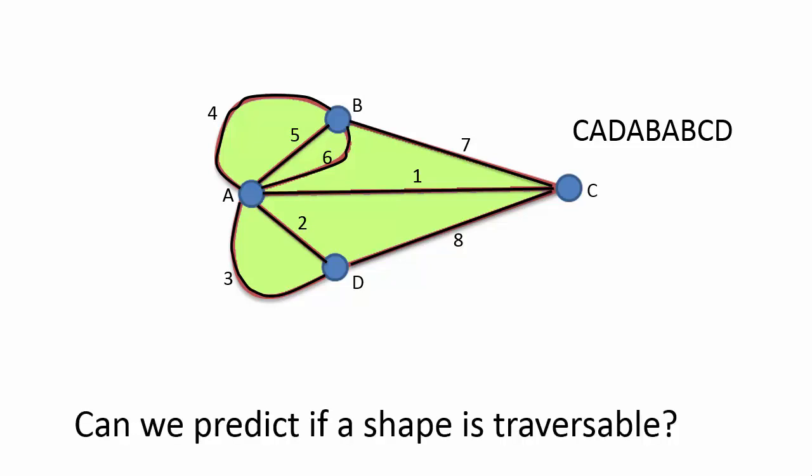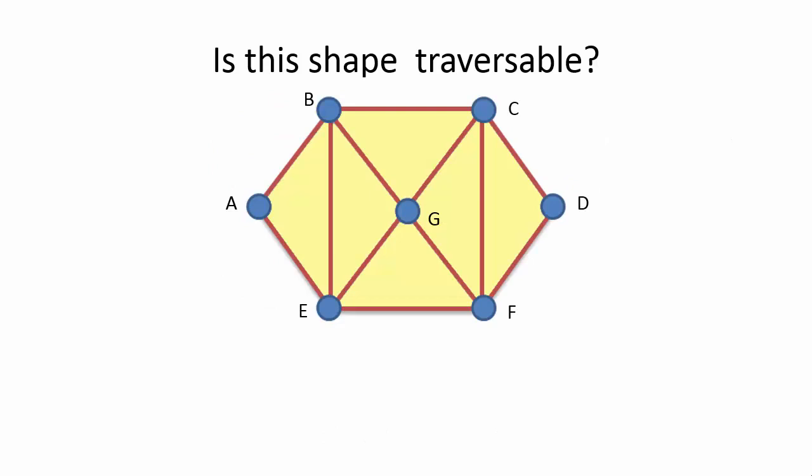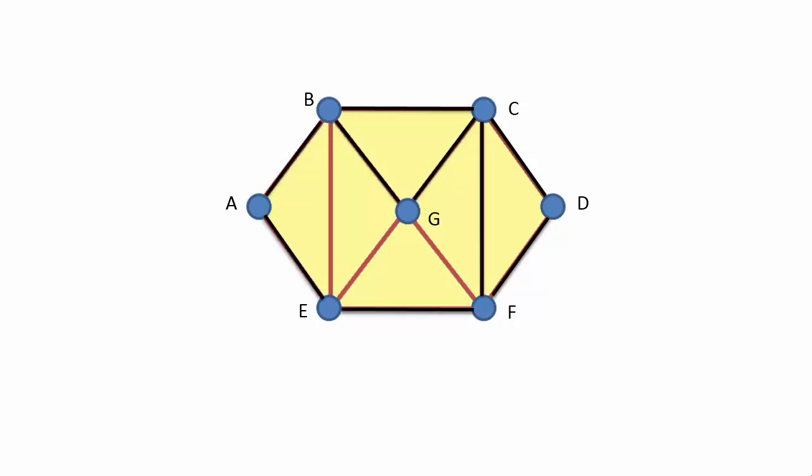Is it possible though to predict in advance whether or not the path is traversable? We shall see shortly. What about this shape? Is this one traversable? Again, the answer is yes. Here is one way of doing that: B to C, C to D, D to F, F to C, C to G, G to B, B to A, A to E, E to F, F to G, G to E, and finally E to B. There is a way of showing that again as a path using the vertices' letters.